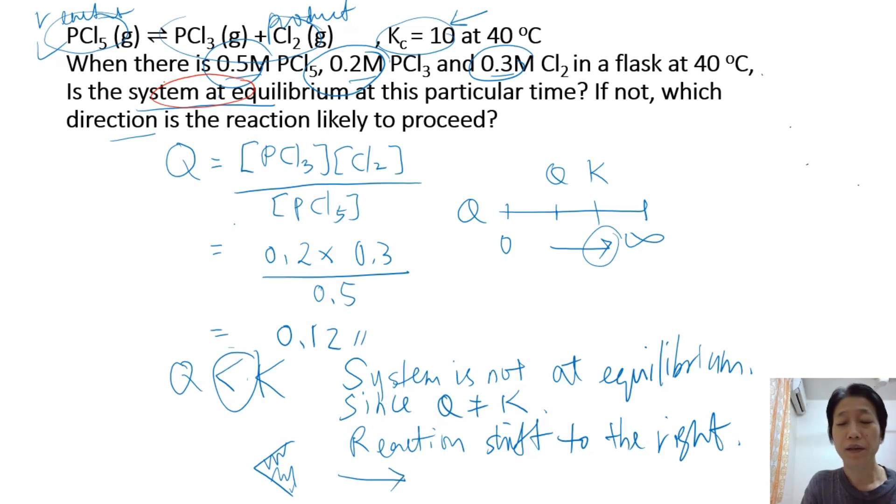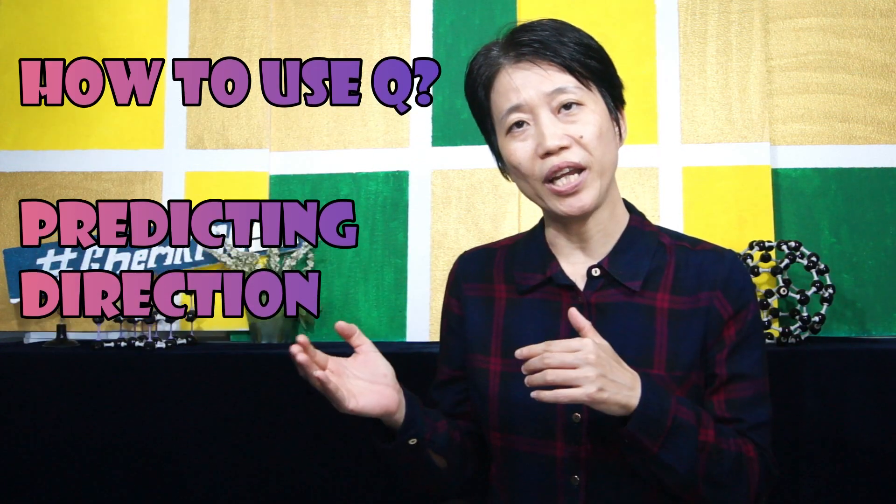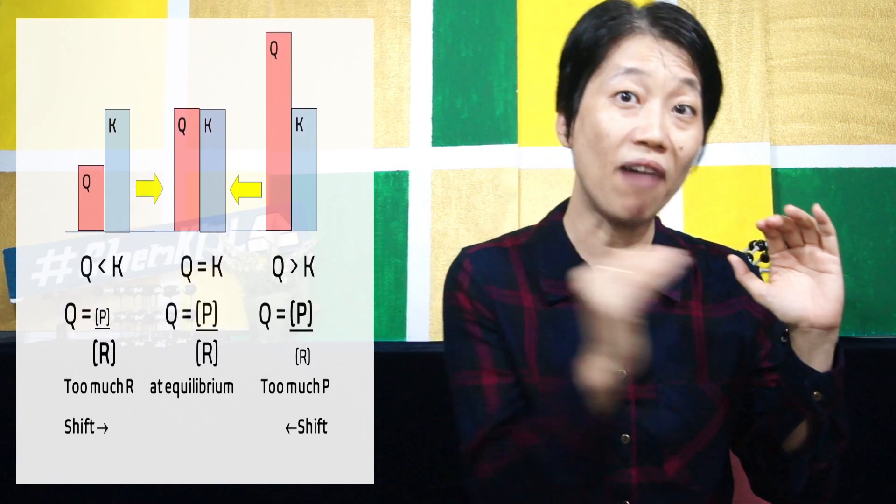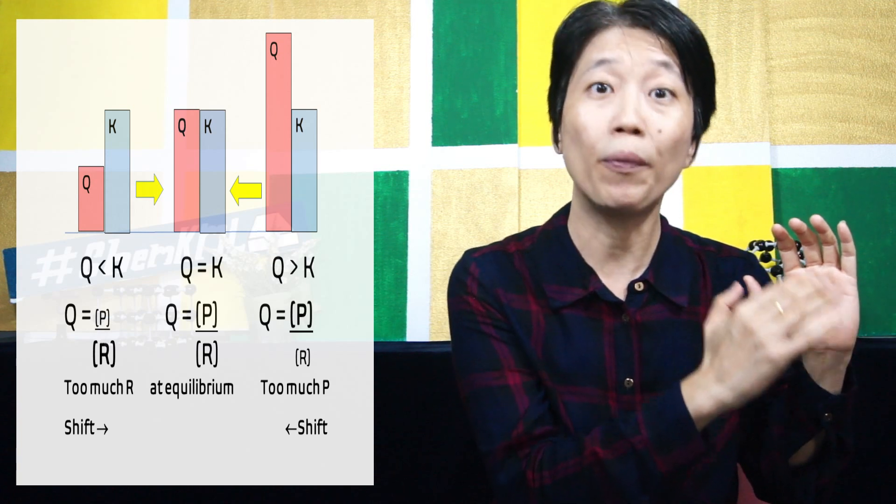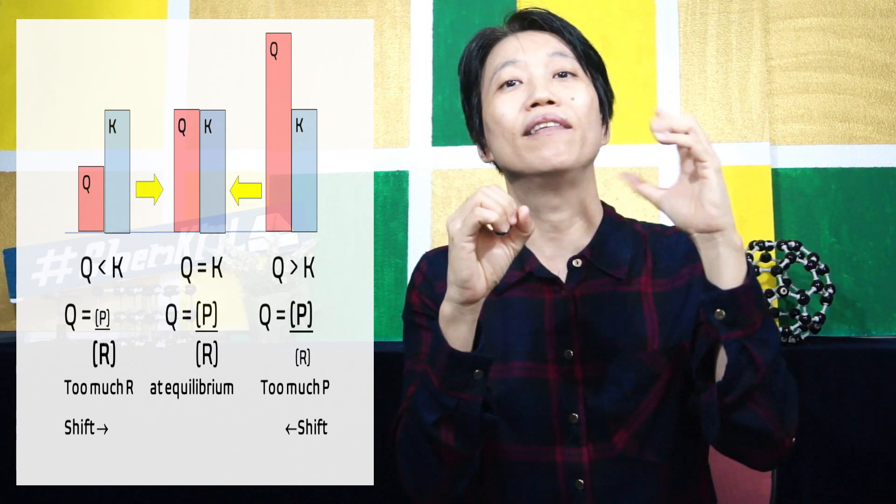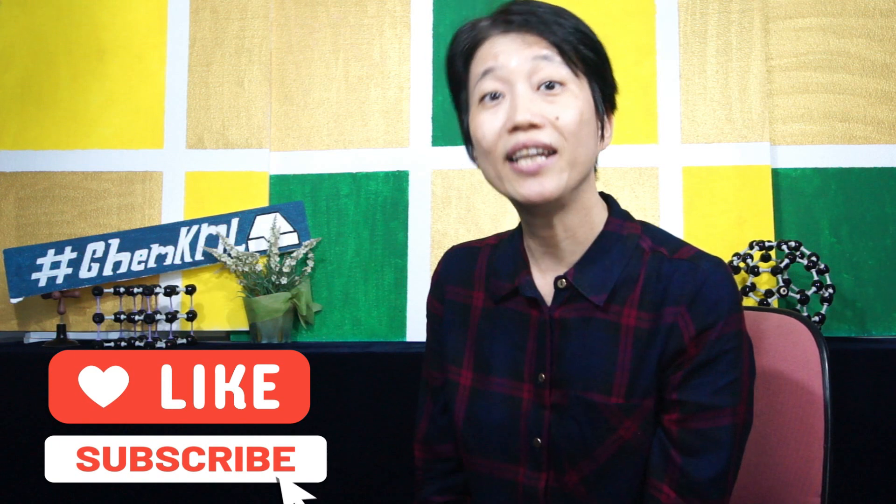So in this video we have learned what is reaction quotient Q, what is the use of it, and how to predict the direction of a net reaction before they reach equilibrium. Remember Q may have a value from zero to infinity. If Q is smaller than K, the reaction will tend to shift to the right towards producing more products. If Q is larger than K, then the reaction will tend to shift to the left to produce more reactants. I hope you like this video. If you like this video, please like, share, and subscribe. Thank you.